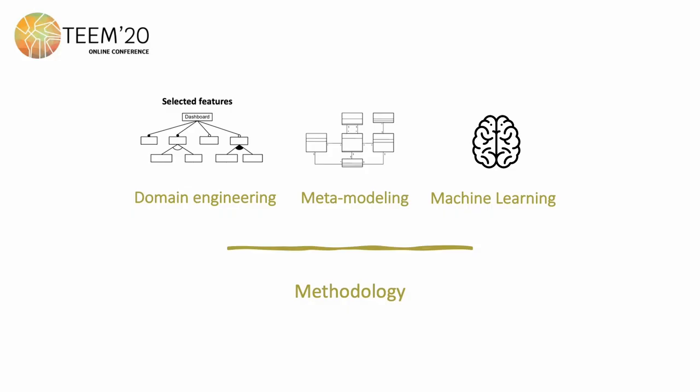To do so, we rely on three main methods. Domain engineering to identify these tools' most fine-grained or primitive features. Metamodeling to arrange these features into an abstract model that can be instantiated into specific products. And finally, machine learning to learn which of these dashboard features are most important depending on the context.